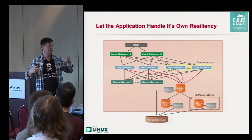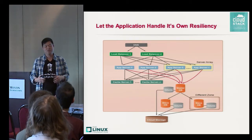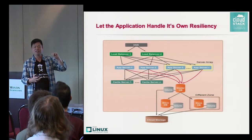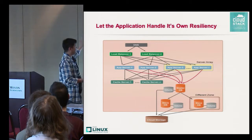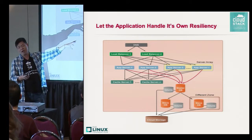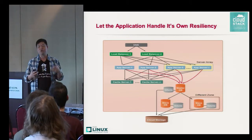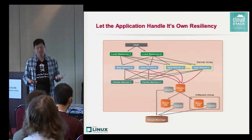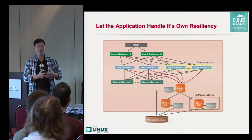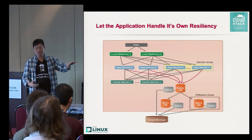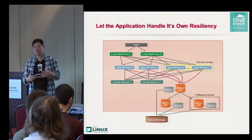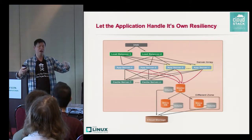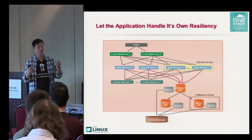The key is: since the infrastructure is always going to fail, let the application handle its own resiliency. Build an architecture using applications that will handle their own failure and their own replication. A good example is Cassandra — a NoSQL database that Netflix uses — where everything is spread out across multiple copies across many servers and even regions. If a whole region fails, they automatically point everything to another region, and users don't even know something has happened. To make that work, you need a cloud platform that can handle that type of multi-region, scale-out architecture — and that's where something like CloudStack comes in.